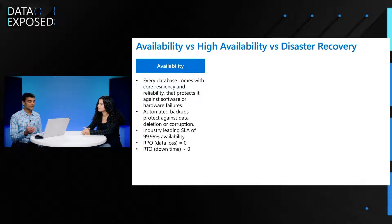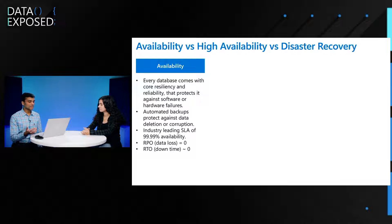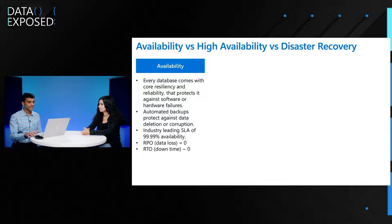Now, in business continuity, the two key terms are RPO — recovery point objective, which is essentially the data loss — and because of the redundancy we have across different layers starting from compute and storage, we can guarantee zero data loss for availability. And for recovery time objective, our goal is to make it as close to zero as possible. We have seen cases where we don't get to zero, but our goal is to get there as much as possible.